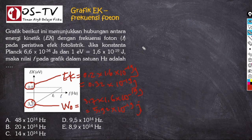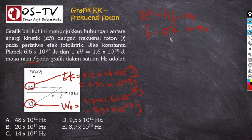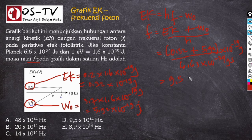Yang ditanyakan adalah frekuensi F. Kita gunakan persamaan EK = h·f − W₀, sehingga f = (EK + W₀) / h. Kita masukkan nilai-nilainya: f = (0,32 + 5,92) × 10⁻¹⁹ joule dibagi dengan 6,63 × 10⁻³⁴ J·s.